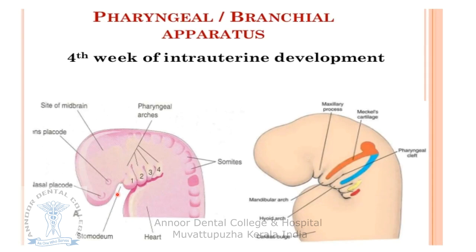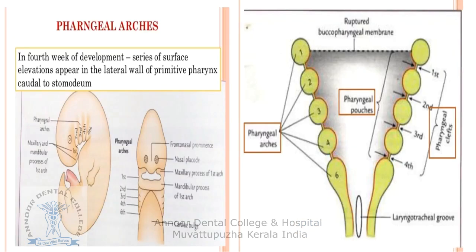The head is separated by a bulging caused by the developing brain, and the pericardium may be considered as occupying the region of the future thorax. These two are separated by the stomodeum, which forms the future mouth and neck. In the fourth week of intrauterine life, the neck is formed by the elongation of the region between the stomodeum and the pericardium.